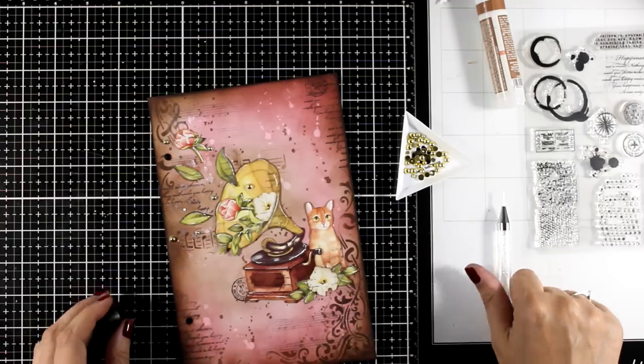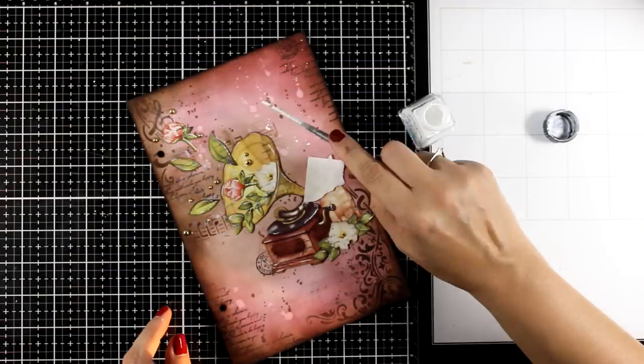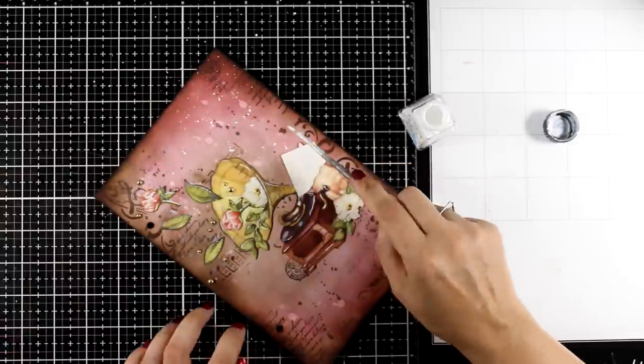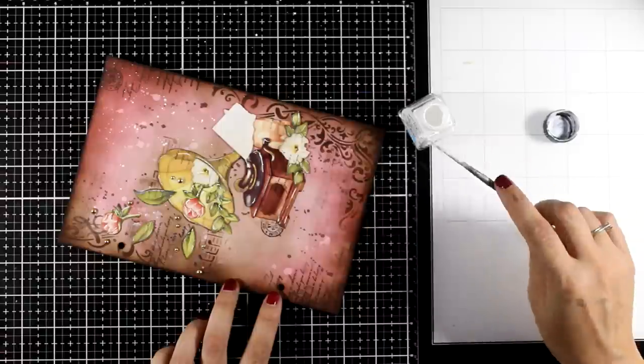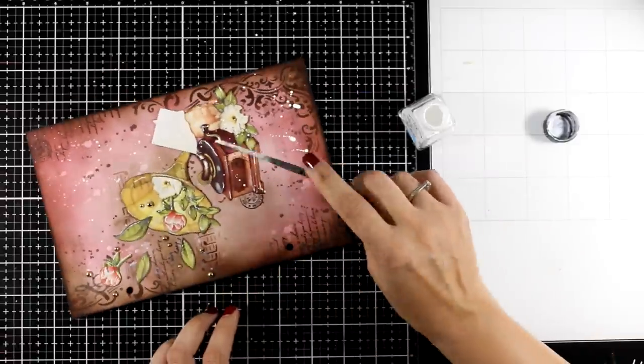And I'm still at step number six where I'm adding white. First the white highlights with a white gel pen, and now with brass and calligraphy ink, just adding splatters all over the place.